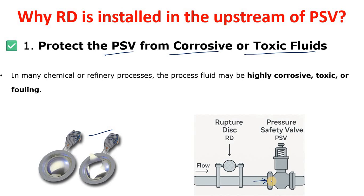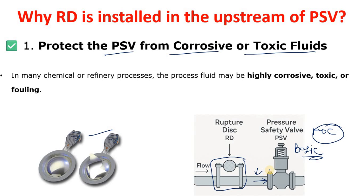You have two options: keep the same material of construction and accept the contact, or upgrade the MOC, which obviously increases cost. However, if you keep the MOC at the basic level — the same as your pipe spec — and install a rupture disk upstream, the RD creates a physical barrier between the process fluid and the PSV internals, protecting them.